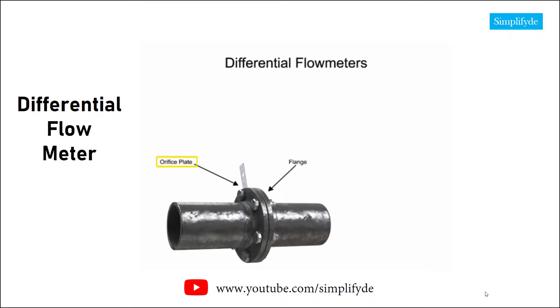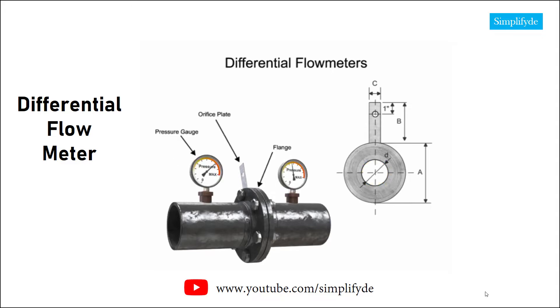The orifice plate of the flow meter is comprised of a circular metal disc with a specific hole diameter that reduces the fluid flow in the pipe. Pressure taps are added on each side of the orifice plate to measure the pressure differential.